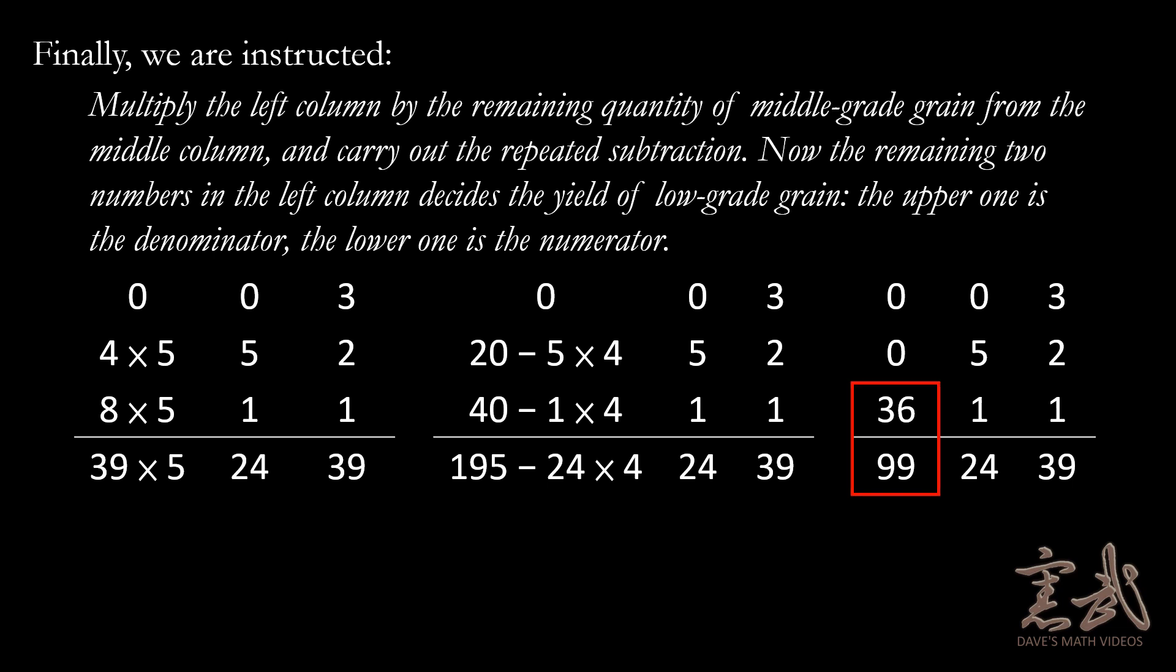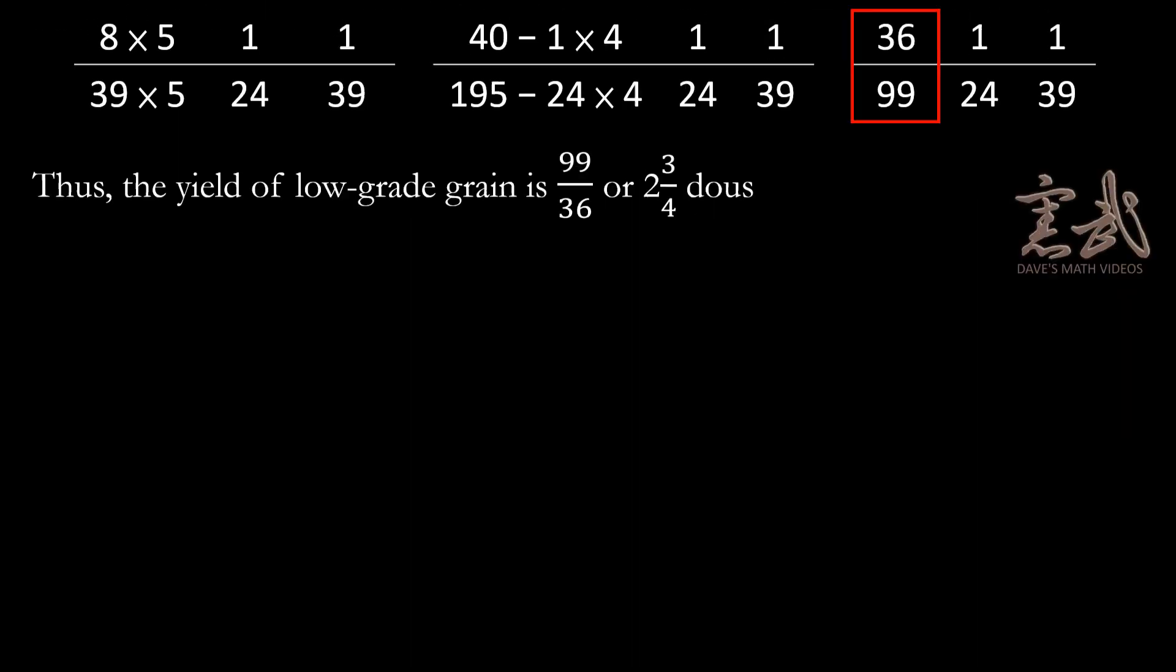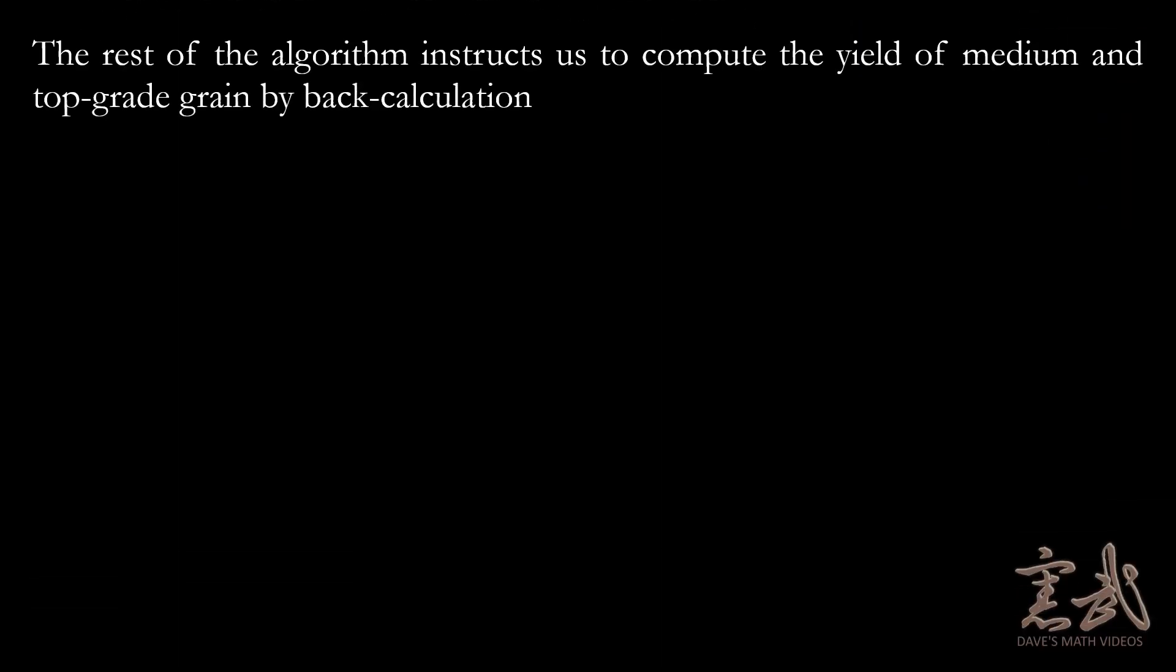Now, we can use these numbers to find the yield of the low-grade grain, which is going to be ninety-nine over thirty-six. Or simplified, that would come out to be two and three-quarters. The rest of the algorithm simply instructs us to compute the yield of the medium and top grade grain by that calculation.